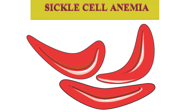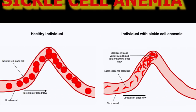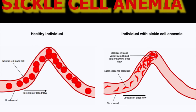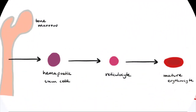Sickle cell anemia is a serious inherited disease. Abnormal sickle or crescent-shaped RBCs are produced by bone marrow that last for only 10 to 20 days in circulation, and the bone marrow cannot make enough to replace them. In thalassemia, bone marrow produces a lesser amount of normal RBCs and more RBCs having abnormal hemoglobin, which get hemolyzed fast.